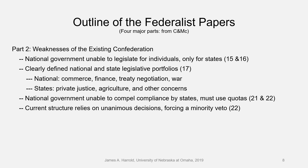The Articles of Confederation had a really hard time defining state portfolios versus legislative portfolios. So what the Constitution did was say: commerce, national finance, treaty negotiation, war — those all belong to the national government. The states still own private justice, that is criminal law mostly, agriculture, and other concerns. And still today we think of areas that belong strictly to the states and areas that belong strictly to the national government — and we still argue about it. K-12 education is one of the classic areas where there is still tension between the national government and the state governments, because many people assert that K-12 education is strictly a state concern. And in fact, funding still comes mostly from state and local sources.